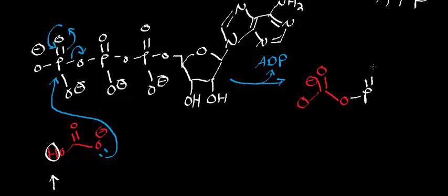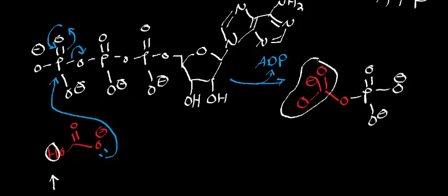Notice how this part of the molecule has lost its proton. The reason it does that is because this part of the molecule has a pKa that's below that of water, so it ends up donating the proton to some base. And then ultimately, when this phosphate comes off, it's going to abstract that proton again. We'll keep our eye on this proton, although it's not too important.